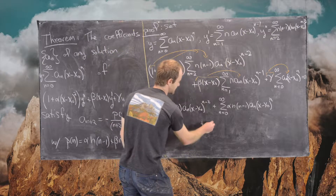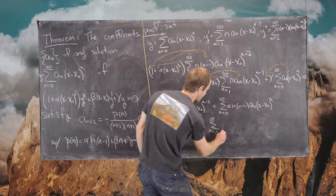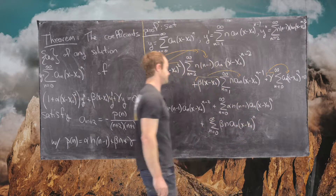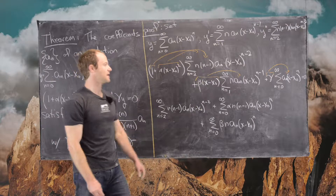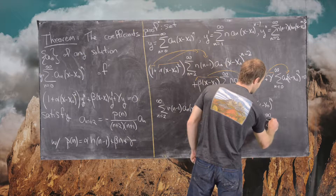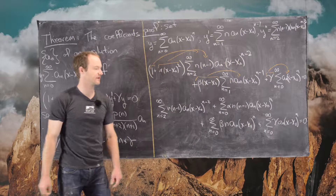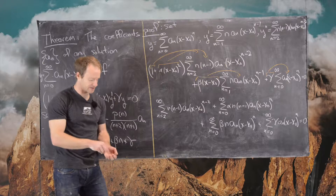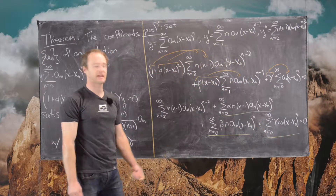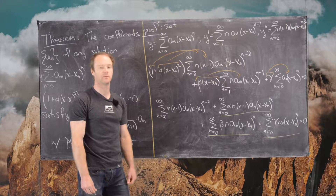Next, using the same index-shifting trick, we get plus the sum from n equals 0 to infinity of β·n·a_n·(x−x₀)^n. And then plus the sum from n equals 0 to infinity of γ·a_n·(x−x₀)^n — no index changes needed for that one. Notice that these three terms are like terms: the powers of (x−x₀) are the same, so we can combine them into one sum.